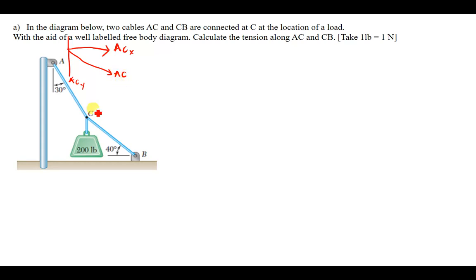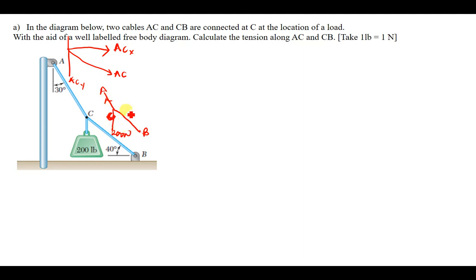At this joint we have AC and CB. So at joint C we have points B and A, and there is also the 200 newton load. We consider all these ropes to be in tension, meaning the forces are moving away from the joint.